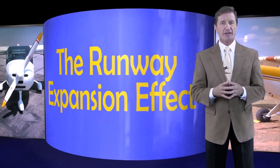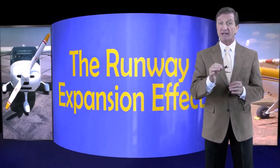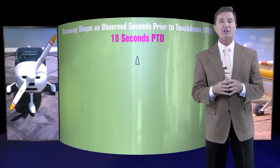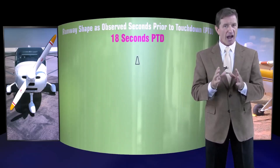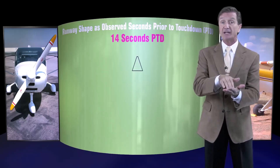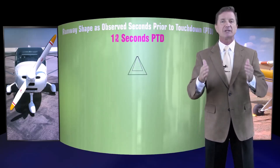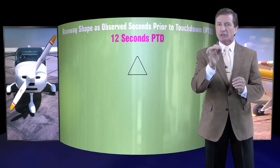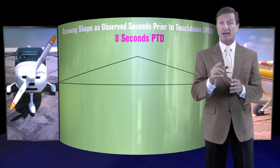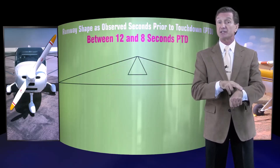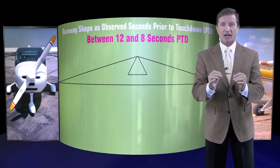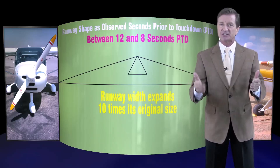As we learned in an earlier video, when you approach the runway in a stabilized descent, its trapezoidal shape appears to grow in the windscreen. The rate of growth, however, isn't linear. It turns out that the width of the runway near your selected landing spot appears to expand geometrically in the windscreen, with the largest amount of growth occurring when you're 8 to 10 seconds from touchdown. In fact, during the period from 12 seconds to 8 seconds prior to touchdown, the runway width at your selected landing spot appears to expand 10 times in size.